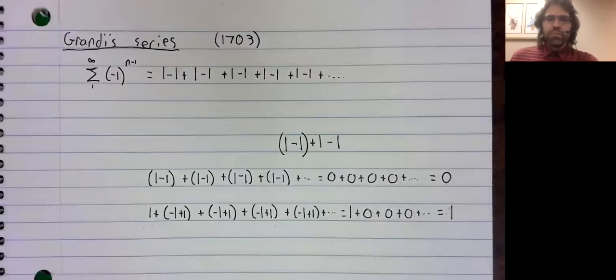A lot of people thought it should equal one half, and I mean very prominent mathematicians. Leibniz, one of the co-inventors of calculus, thought this should be one half. Euler, another co-inventor of calculus, thought it should be one half.